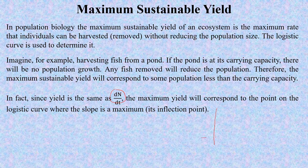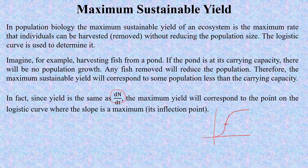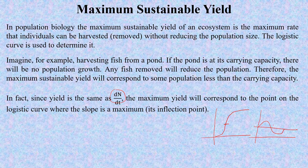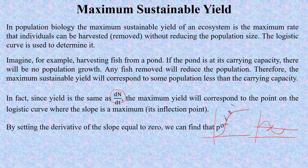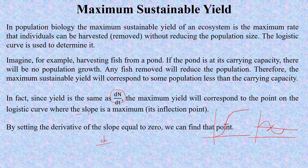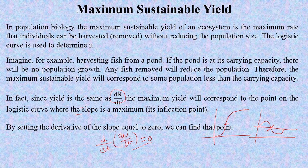If this is a sigmoidal curve, this point is the inflection point. By setting the derivative of the slope equal to zero, we can find this point. So when the derivative equals zero, we reach the maximum sustainable yield point.